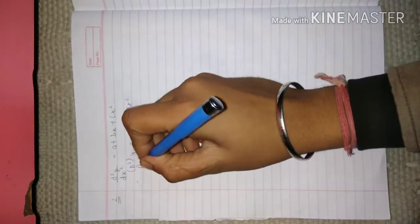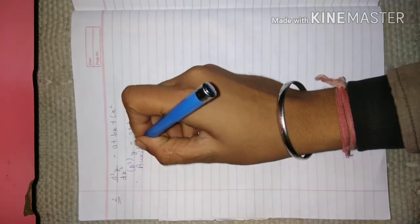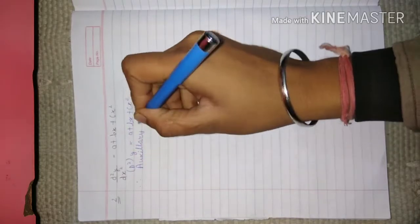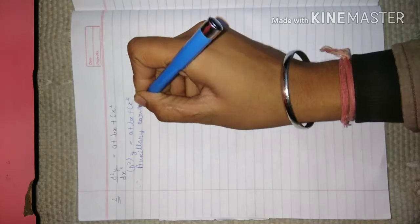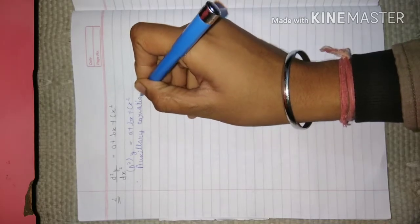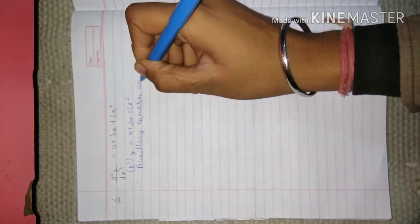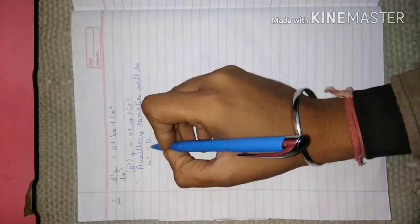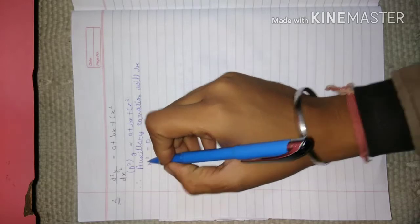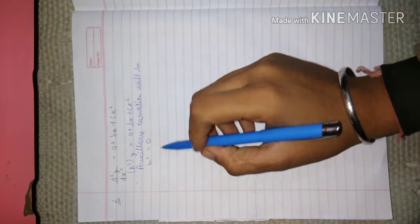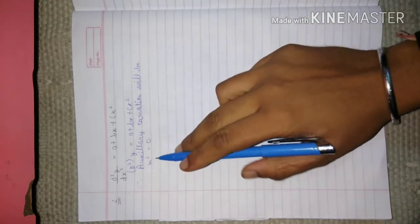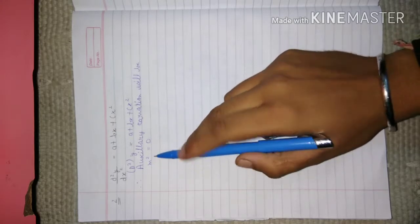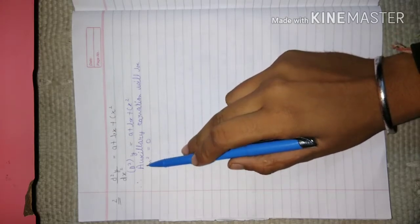Therefore, the auxiliary equation will be m² = 0. Now this is the important thing: students must consider that if there is m², then it will have two roots.